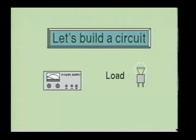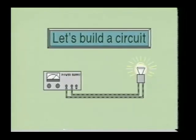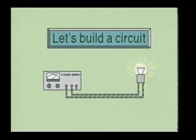We must also have a way to connect the power source to the load. Therefore, we need some form of conductor. A conductor is anything which allows the electrons to flow through it easily. Wire is a commonly used conductor. Another common conductor is the copper clad foil used on printed circuit boards. The conductor allows the electrons to leave the power source and travel to the load, then back to the power source. This creates a closed loop path for the electrons to flow. The power source, load, and conductors are all that is required to make a simple electrical circuit function.